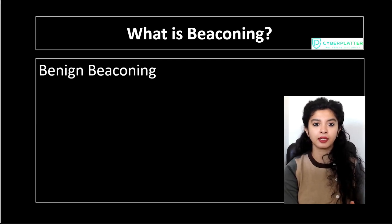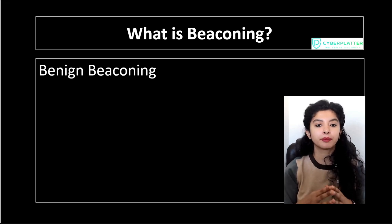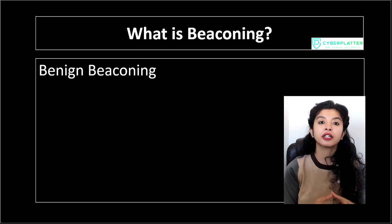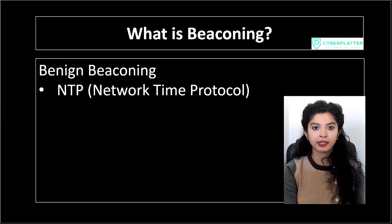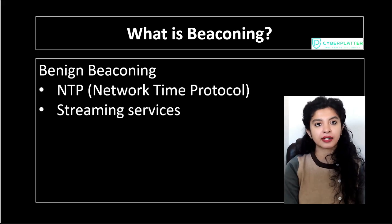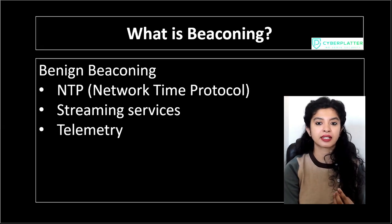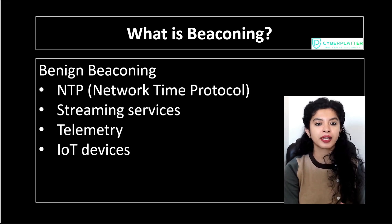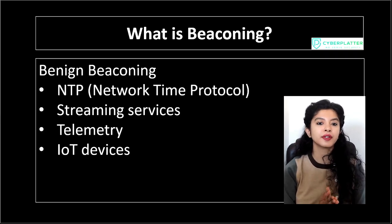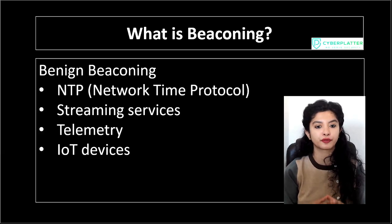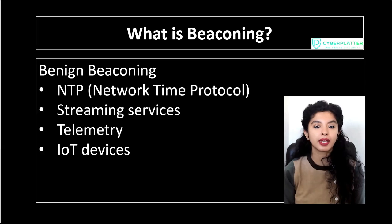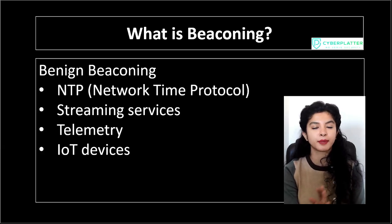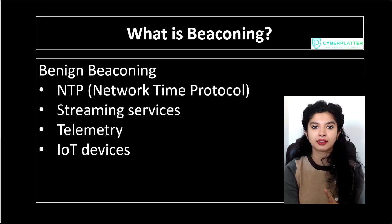Now let's look at benign beaconing. There are plenty of normal applications that behave similarly, but not all beaconing is malicious. For example, NTP — network time protocol — syncs time at regular intervals. Streaming services like Netflix or Spotify send heartbeats to keep sessions alive. Telemetry services such as Windows sending health or update checks, and IoT devices that frequently check in with cloud platforms — all of these are benign beaconing. The key difference is that benign beaconing is usually not perfectly consistent, and it typically goes to trusted, well-known domains. Now, after knowing what beaconing, malicious beaconing, and benign beaconing are, let's go to the next related question.